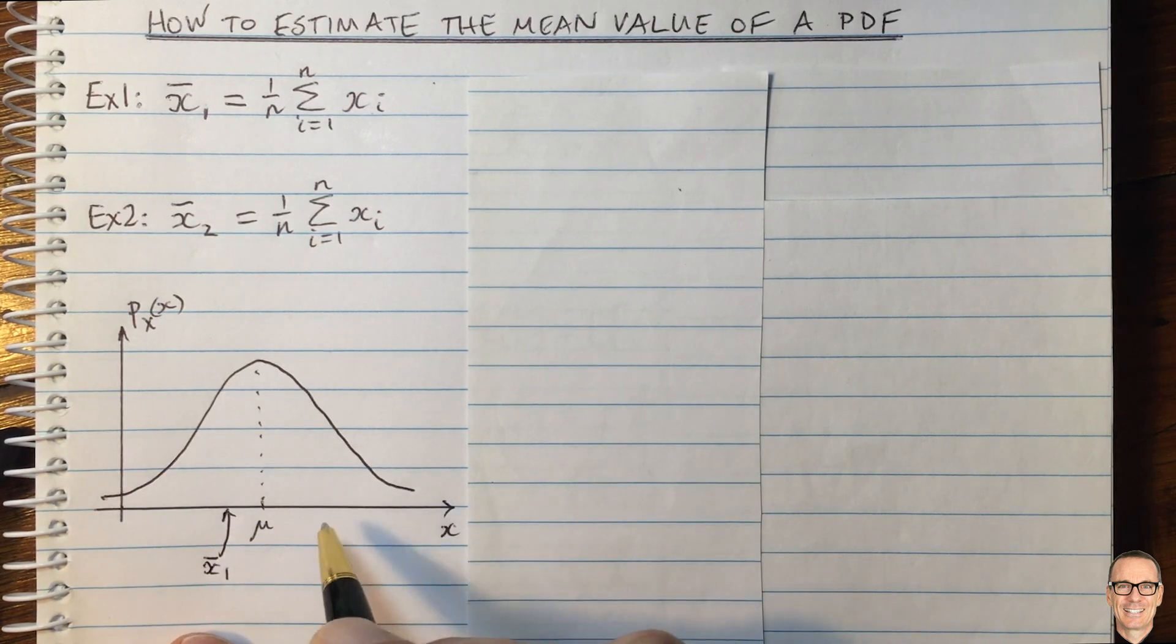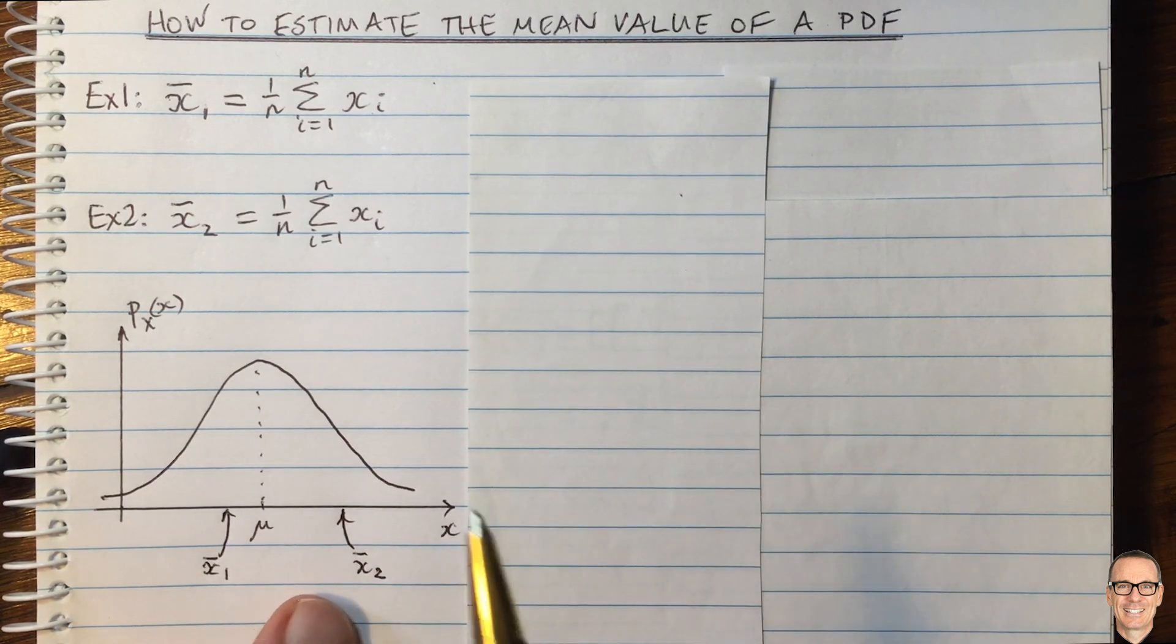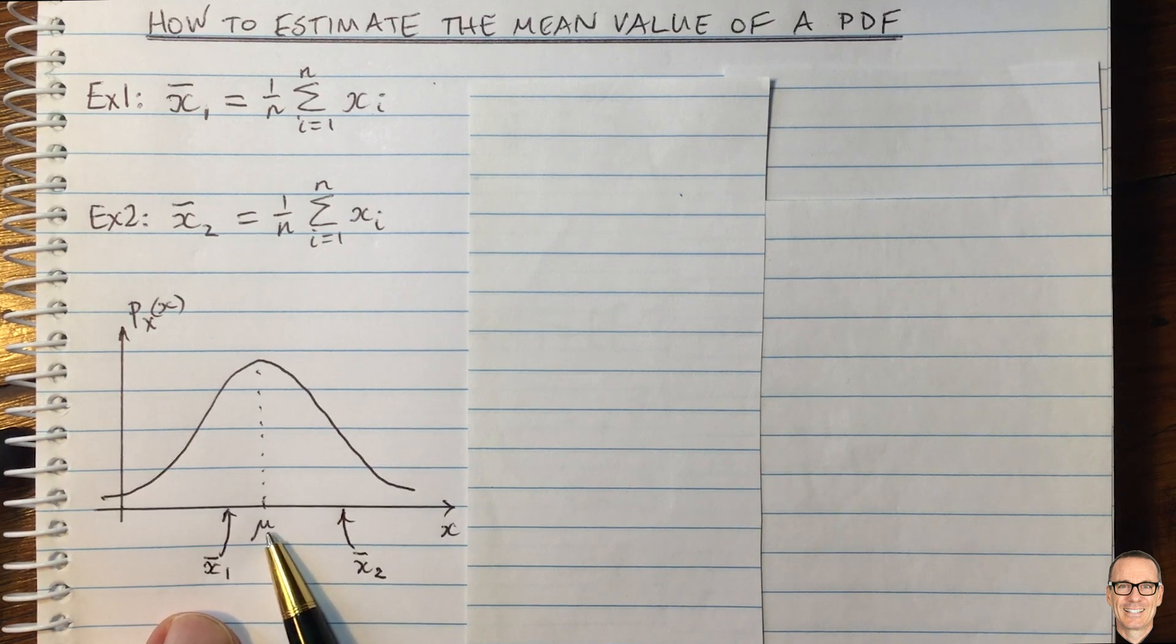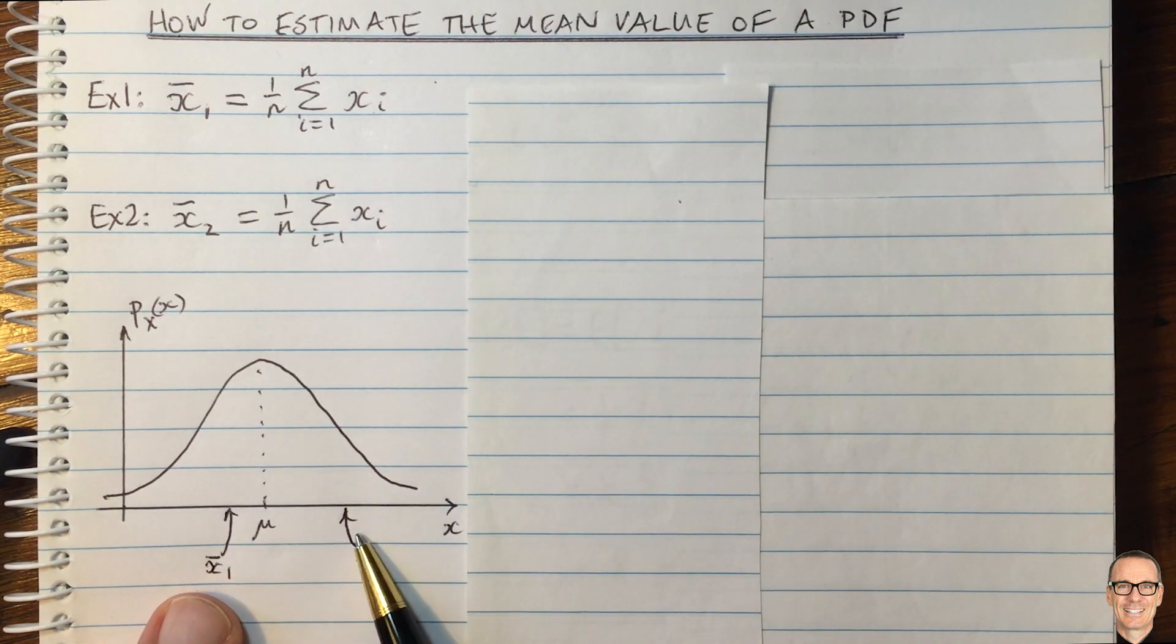x̄₁, the estimate of the mean here. x̄₂ might be here, for example, the second one. And we'd like to know how accurate are they going to be? How close are they going to be to mu? And I think now, looking at it like this, you can realize that these estimates are actually random themselves.